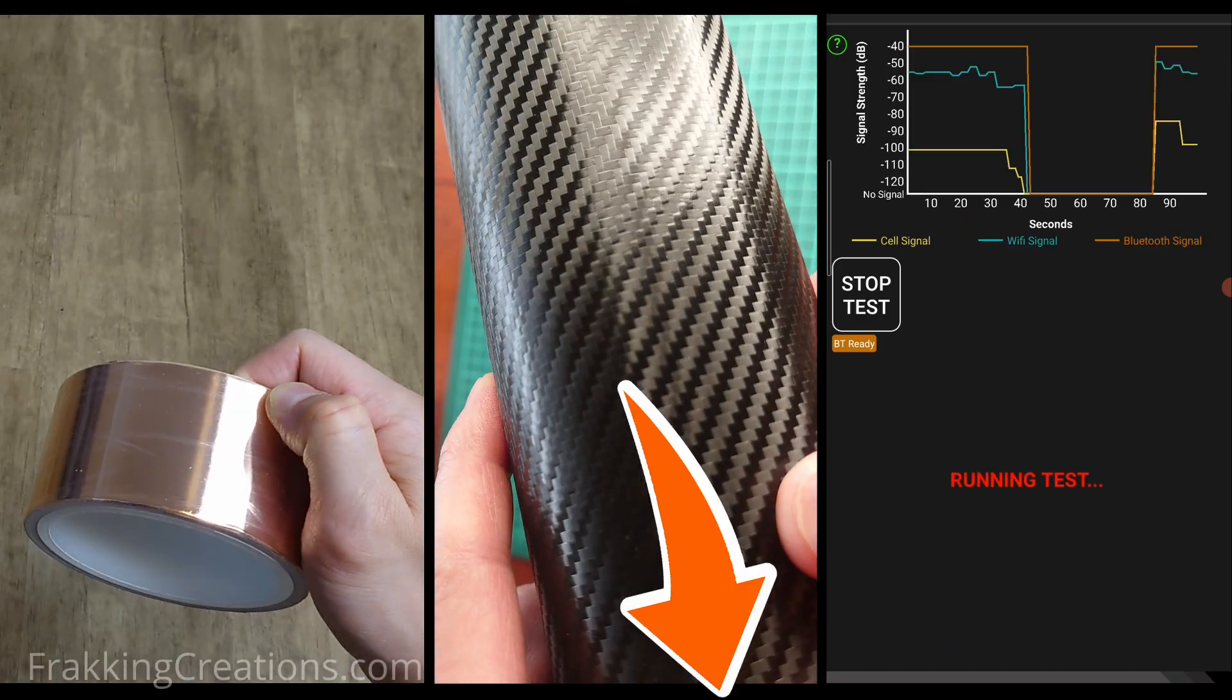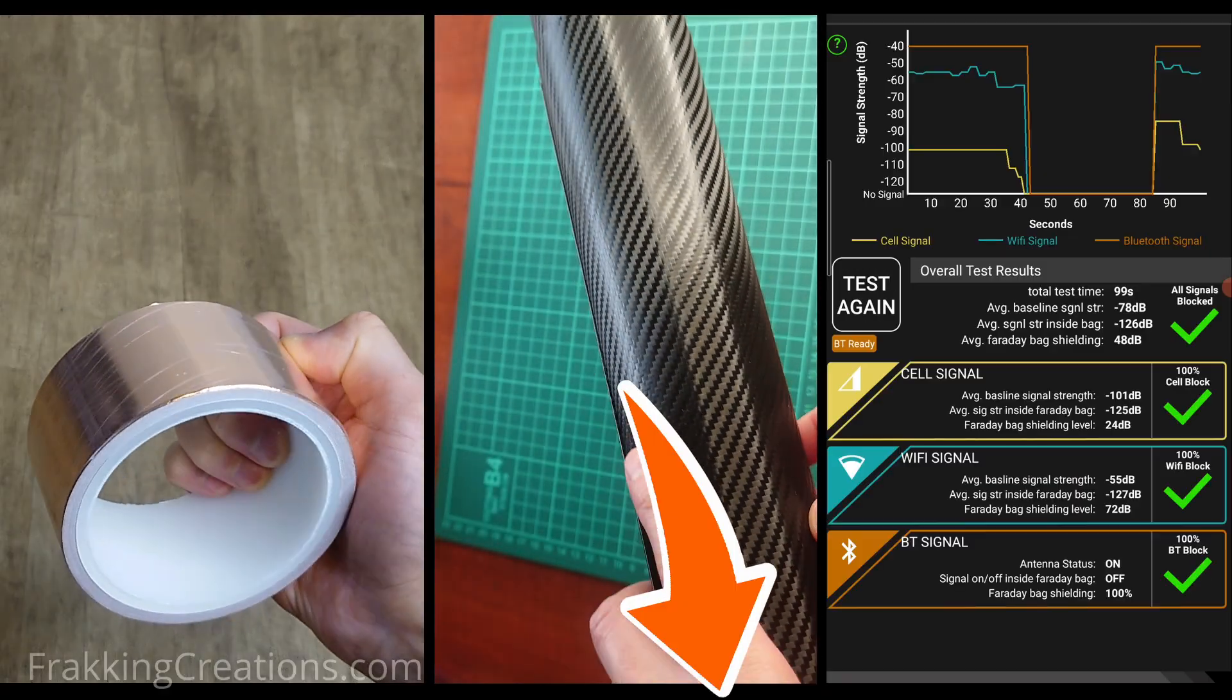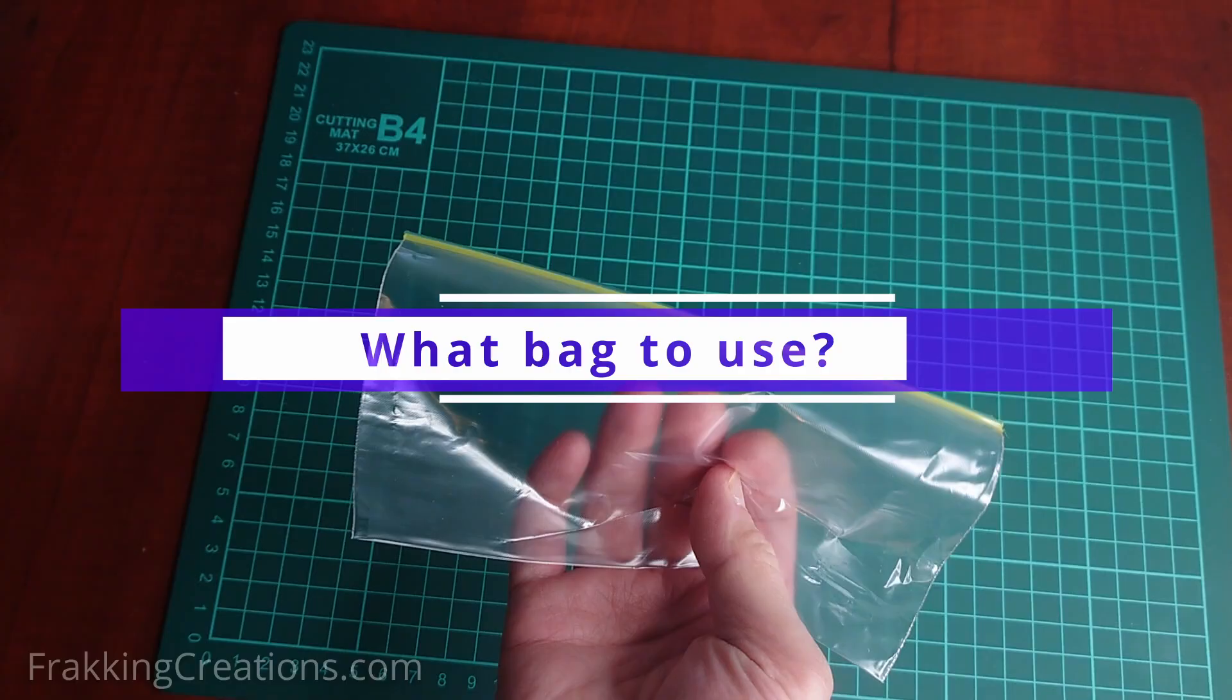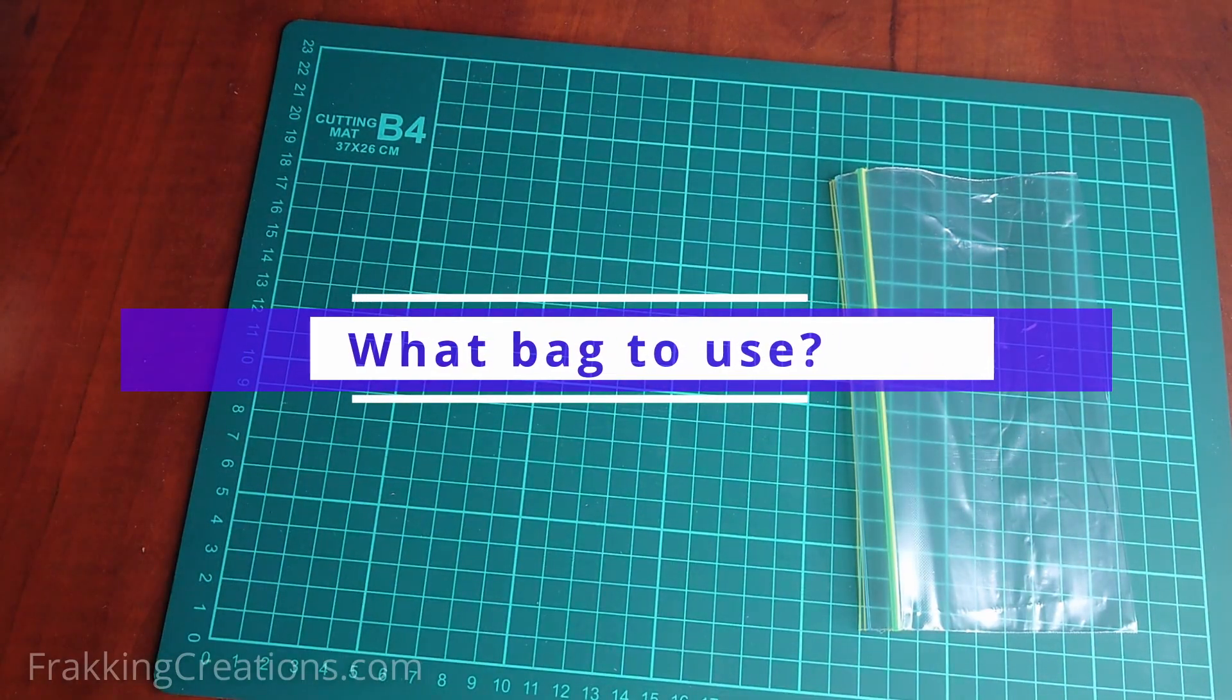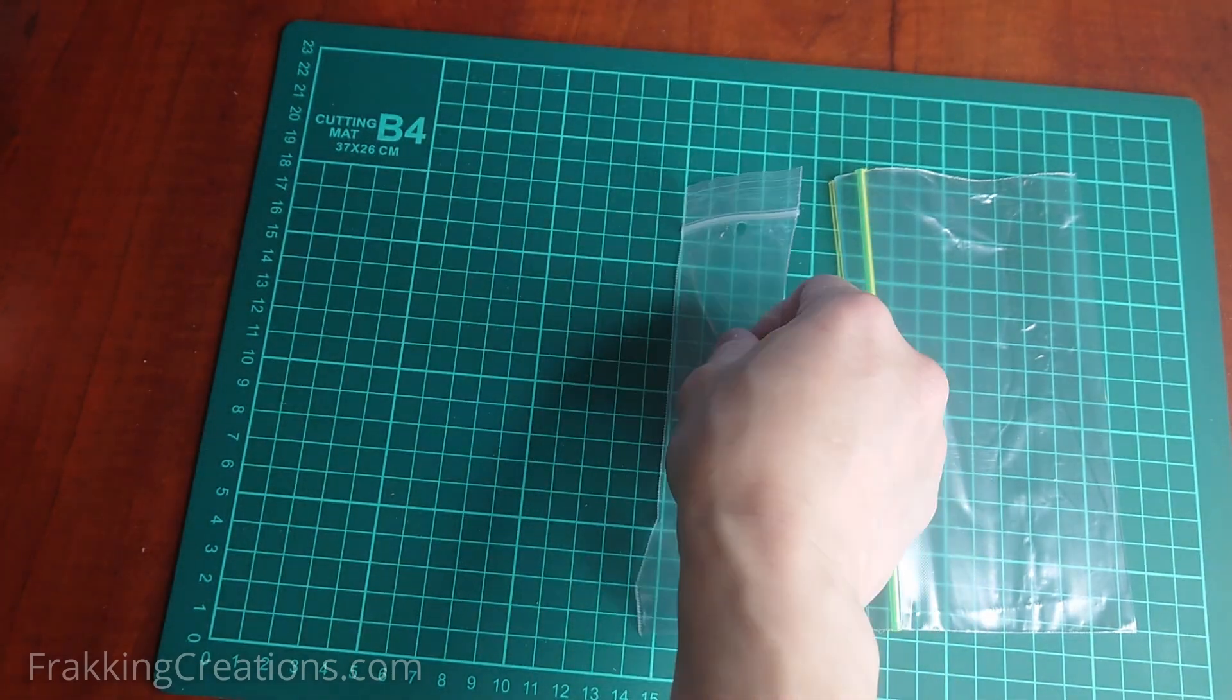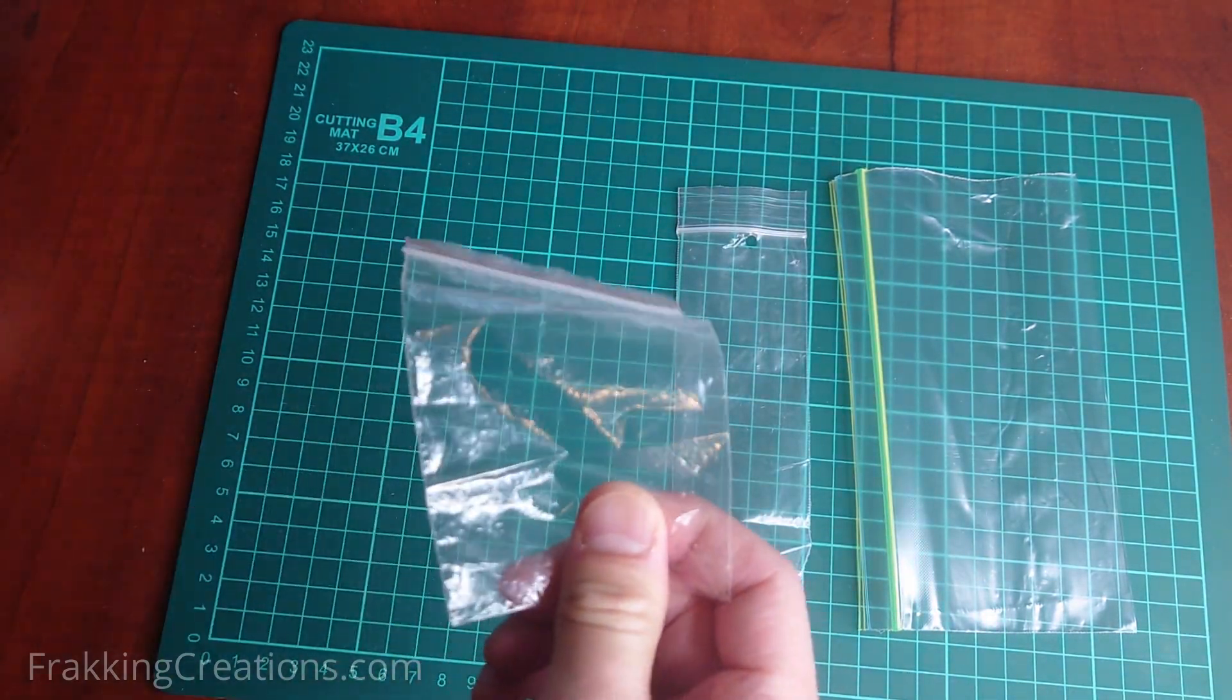Remember to check our video description for links to the items and apps used in this video so you can make your own. What bag to use? I like to use a Ziploc style plastic bag as the base. The zip feature is quite useful and helps keep the contents in and splash protected from water.